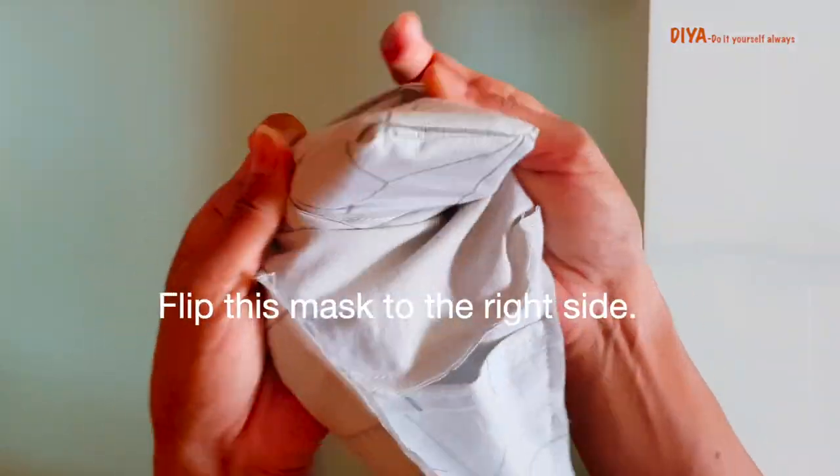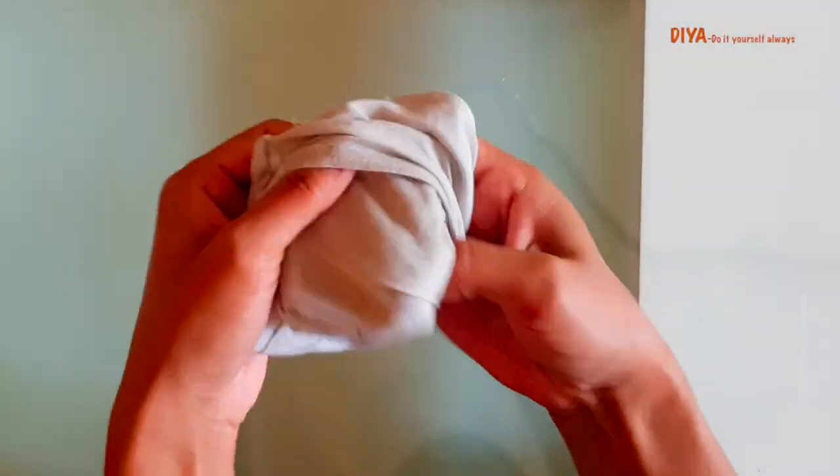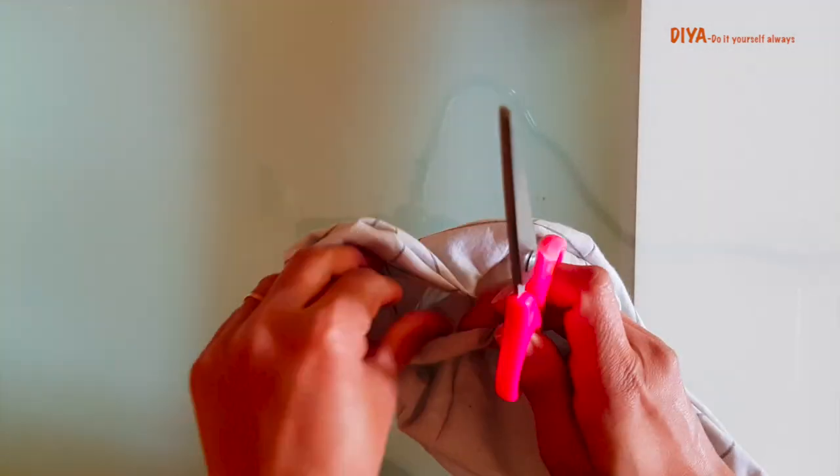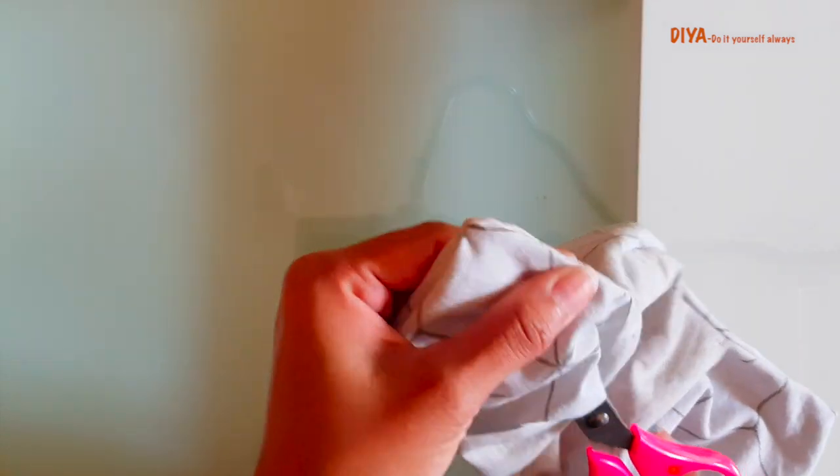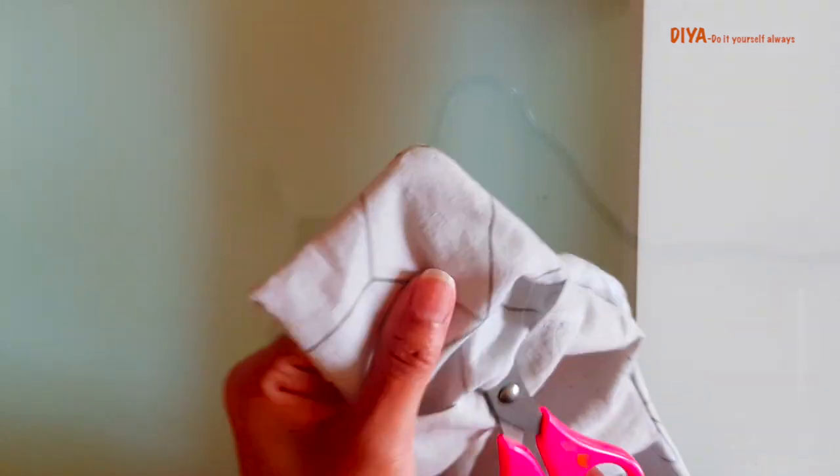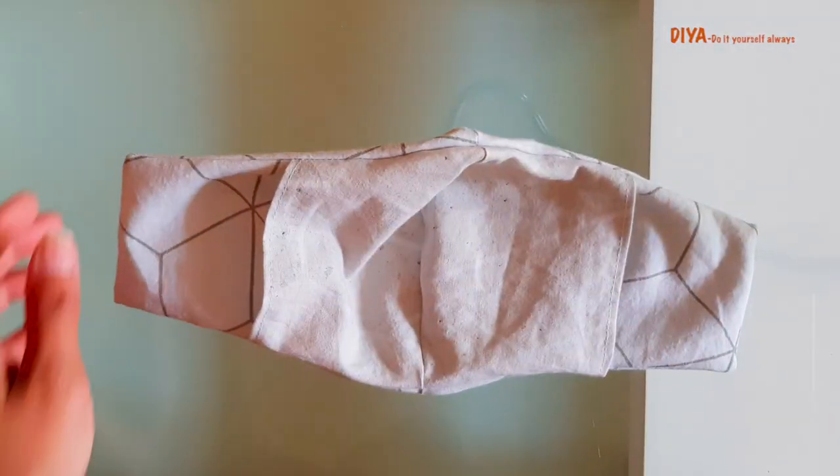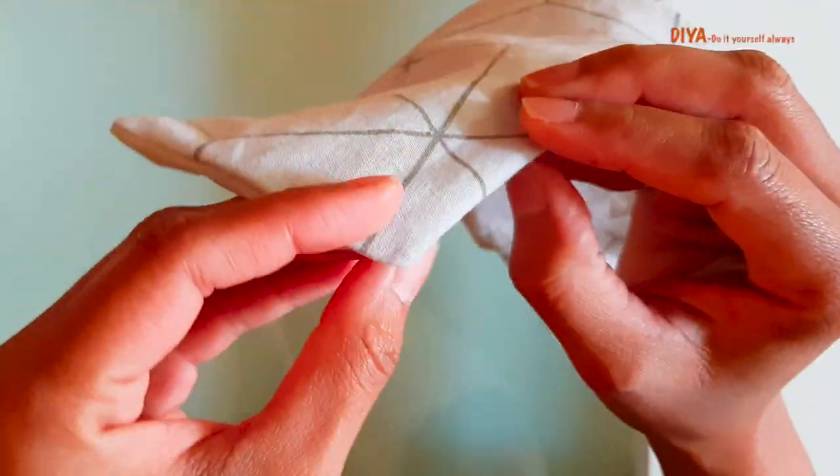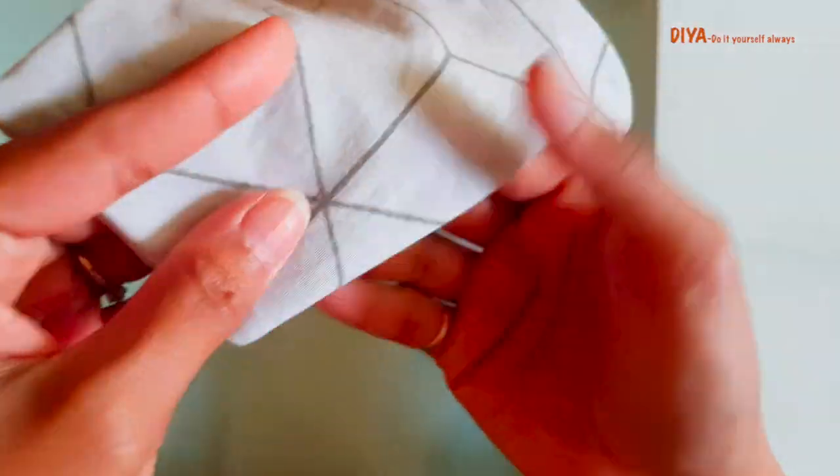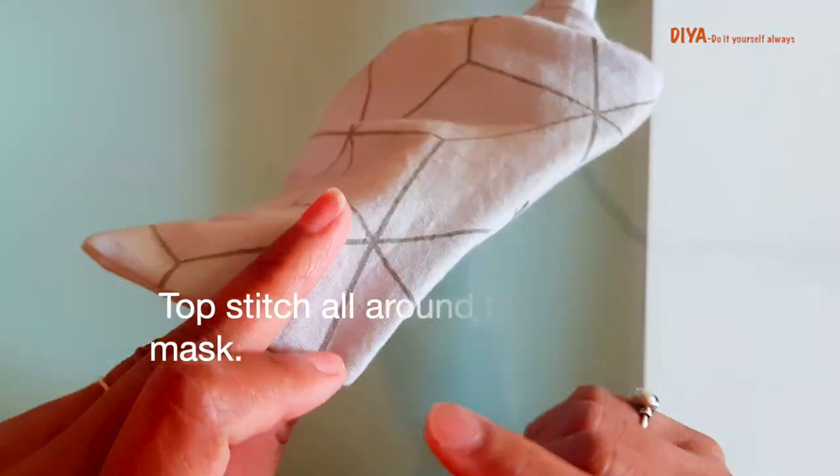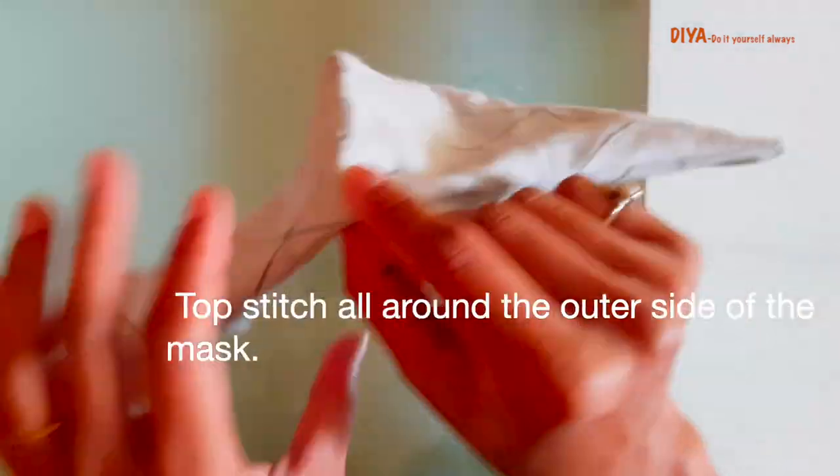Now we need to flip this mask to the right side. For this, start flipping it from the cheek piece and then flip the whole mask. Use any sharp object to properly flip the edges. After flipping, we'll top stitch all around the outer side of the mask.